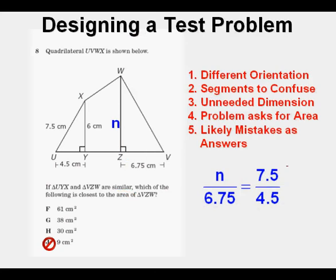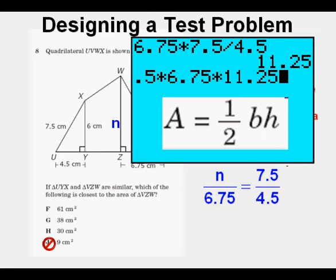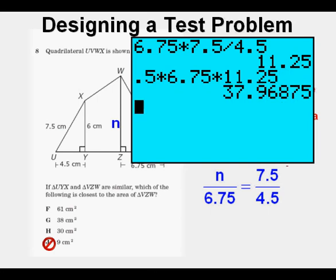Or, let's say that we set up our proportion as N over 6.75 equals 7.5 over 4.5. We cross multiply the 6.75 then divide 4.5 by 4.5 and get 11.25. And now we apply the formula for the area of a triangle. Area equals 0.5 base times height and get 0.5 times 6.75 times 11.25. And that equals nearly 38. So since our answer here is closest to 38, is G our correct answer?